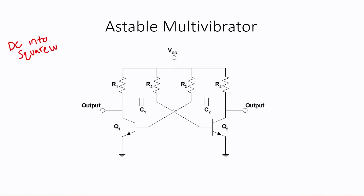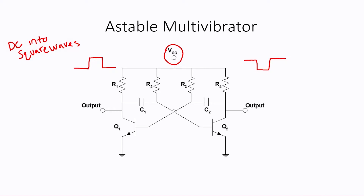What that means is, as soon as we apply VCC, it's going to start generating square wave outputs. Notice I did say outputs because this circuit has two outputs, and they are 180 degrees out of phase with one another. One transistor is going to be on at any given time, and at the same time that one's on, the other transistor is going to be off.